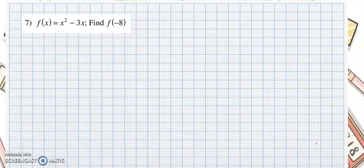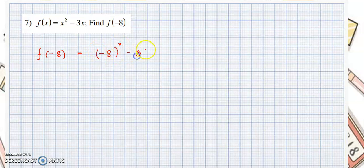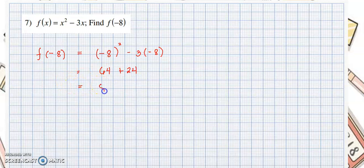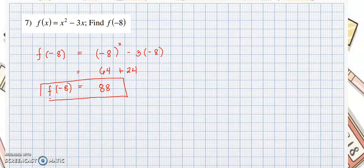Next: find f of negative 8, where f of x equals x squared minus 3x. Substituting: negative 8 squared minus 3 times negative 8. Negative 8 squared is positive 64; negative 3 times negative 8 is positive 24. Adding: 64 plus 24 equals 88. So f of negative 8 equals 88.